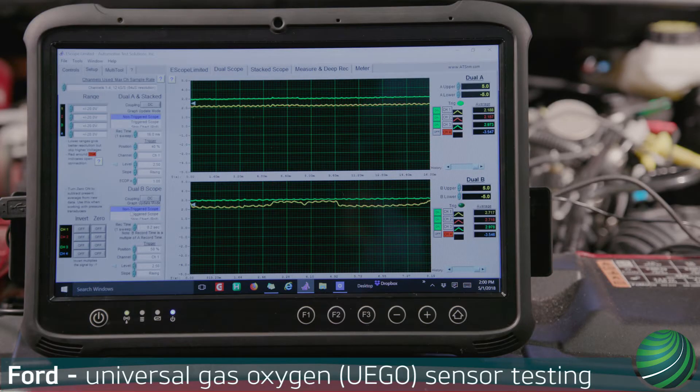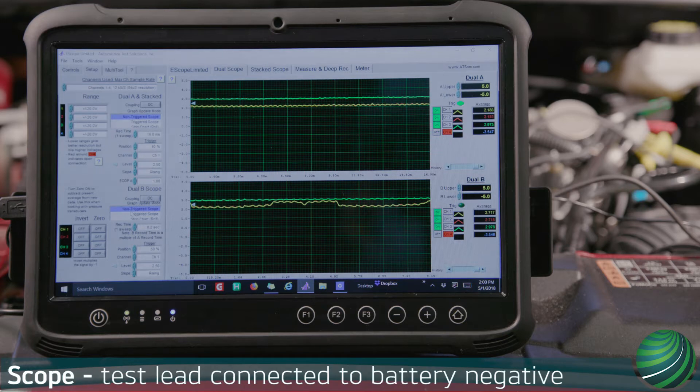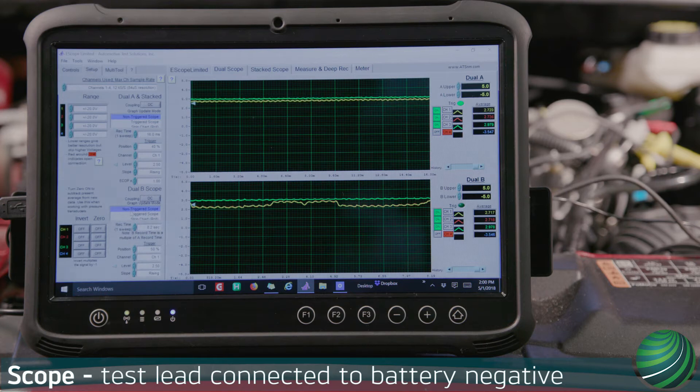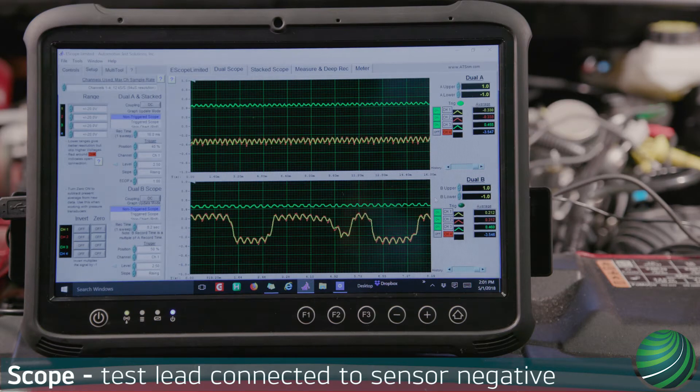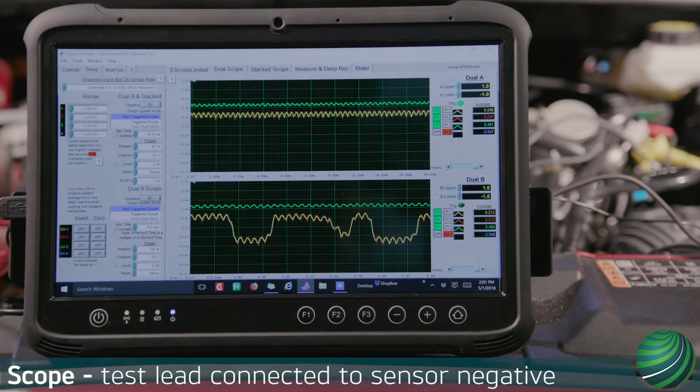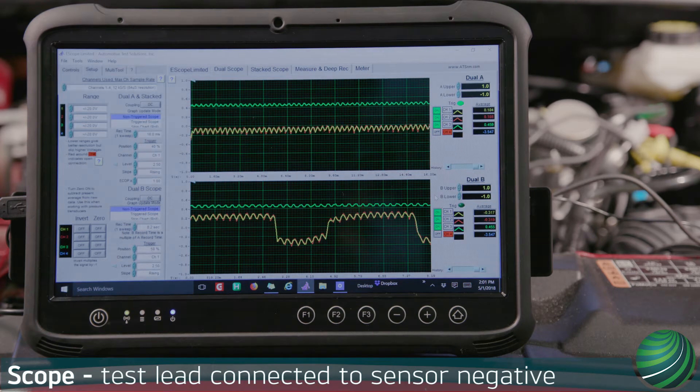When testing with the scope, the voltage displayed will depend on where you place the tester negative test lead. If placed on battery negative, you will see voltages above 2 volts on the sensor or pump circuits. If using the sensor floating ground, you will see positive to negative 450 millivolts at the sensor or pump circuits.